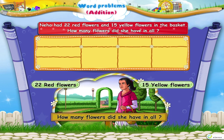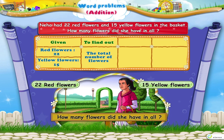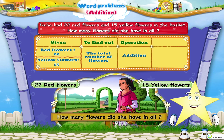First, let us write what is given to us. Red flowers: 22. Yellow flowers: 15. Now, what is to be found out? We need to find the total number of flowers. So, the operation we perform is addition.